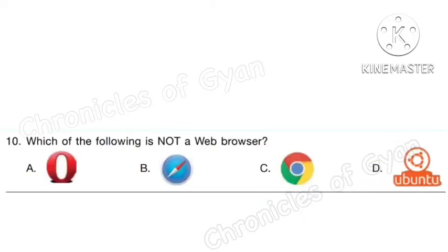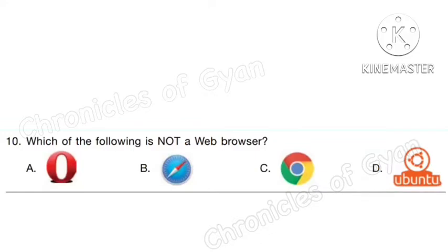Question 10. Which of the following is not a web browser? Opera, Safari, and Google are web browsers. Option D, Ubuntu, is not a web browser. So the correct answer is option D. Ubuntu is an open-source operating system based on Linux for enterprise servers, desktops, cloud, and IoT — meaning Internet of Things.